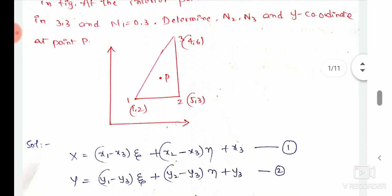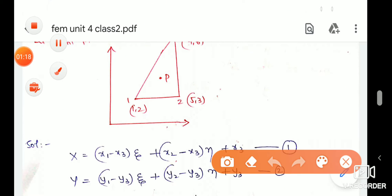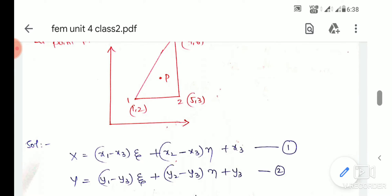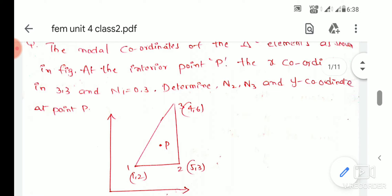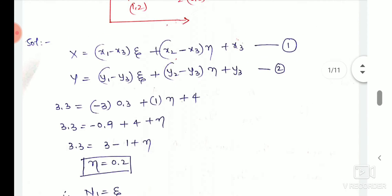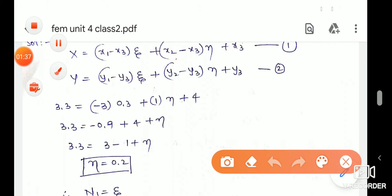Here we have a diagram of 1 to 1. Here we have coordinates. We have coordinates. We have n1. We have a note. In the previous video, we have a derivation on the CST. We have a different formula.